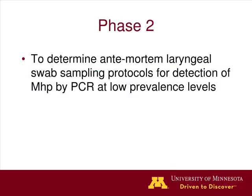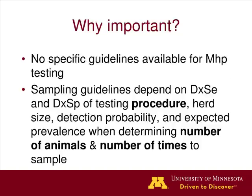Moving to phase two, we took the diagnostic sensitivity from phase one, assumed 100% diagnostic specificity, and our objective was to determine live animal laryngeal swab sampling protocols for detection of Mycoplasma hyopneumoniae, specifically for low prevalence populations. There are currently no specific guidelines available for Mycoplasma hyopneumoniae testing in the field. Sampling guidelines need to depend on the diagnostic sensitivity of the full testing procedure, herd size, detection probability, expected prevalence, and the number of sampling time points — accounting for the slow spread of mycoplasma.